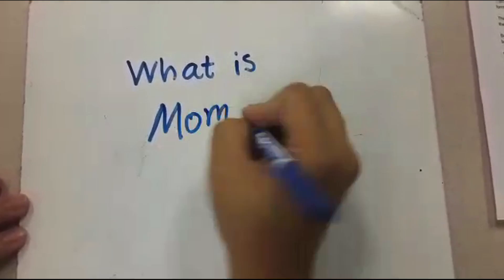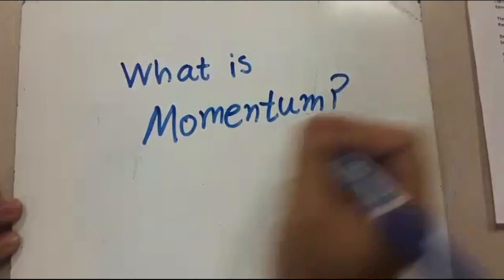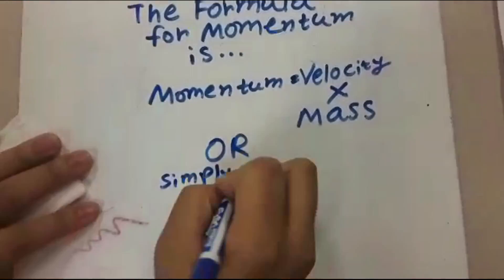What is momentum? Think of it as how resistant an object in motion is to stopping. You can calculate momentum by multiplying mass by velocity.